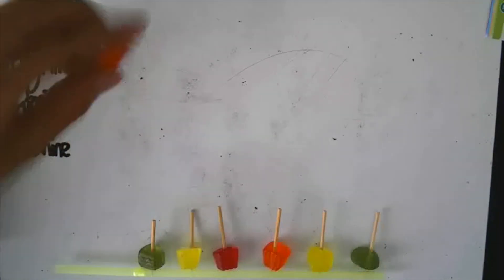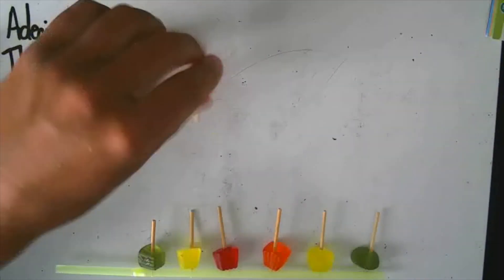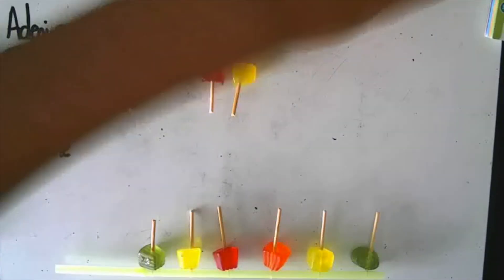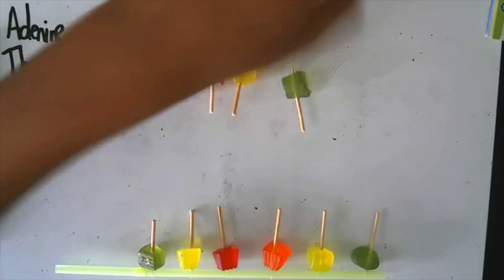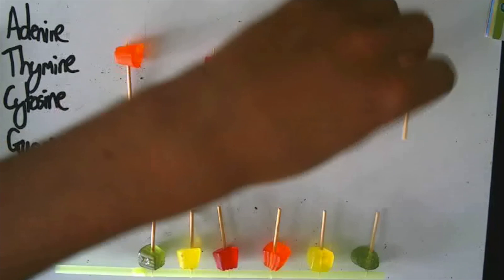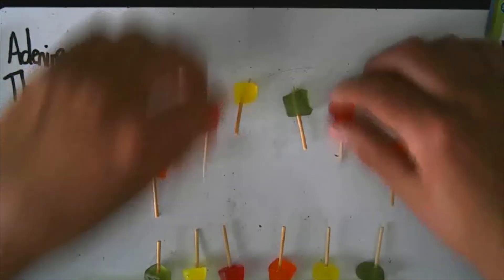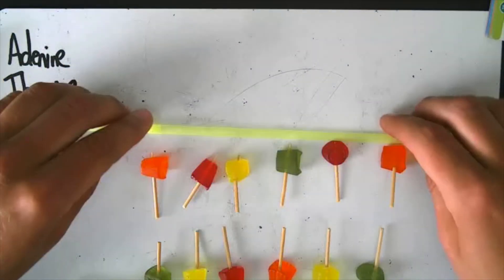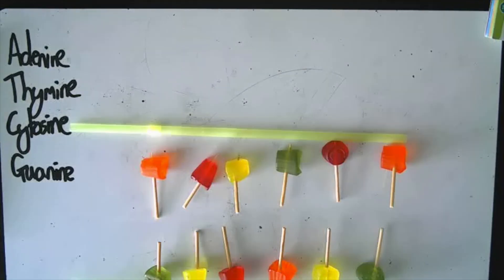Cytosine is going to pair with guanine. Thymine is going to pair with adenine. Adenine is going to pair with thymine. Guanine is going to pair with cytosine. Thymine again pairs with adenine and cytosine pairs with guanine. These move together and they bond, then join with the phosphate sugar backbone to form a DNA strand.